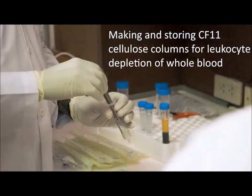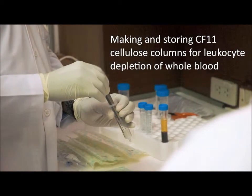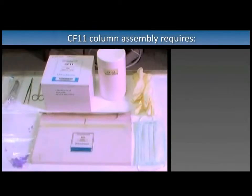CF-11 cellulose columns are used to remove white blood cells from malaria-infected whole blood. Column assembly requires Wattman CF-11 cellulose powder,